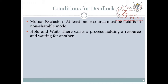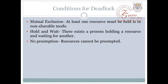The second condition is hold and wait. Hold and wait means there exists a process जो एक resource पकड़ी हुई है और दूसरी के लिए wait कर रही है। Third condition है no preemption। Resources cannot be preempted — इसका मतलब यह है कि एक resource अगर किसी process को दी गई है तो वो resource तब तक release नहीं होगी जब तक उस process की execution fully नहीं हो जाती।